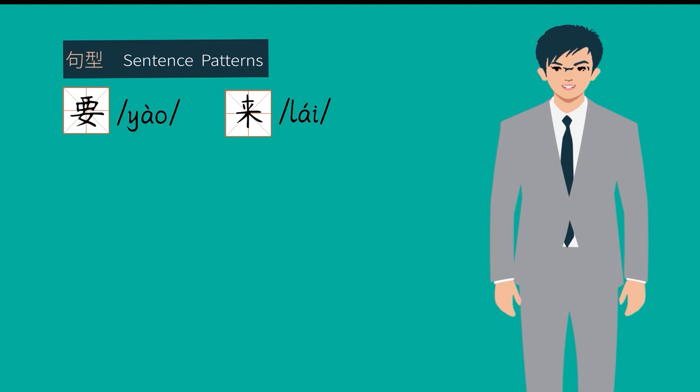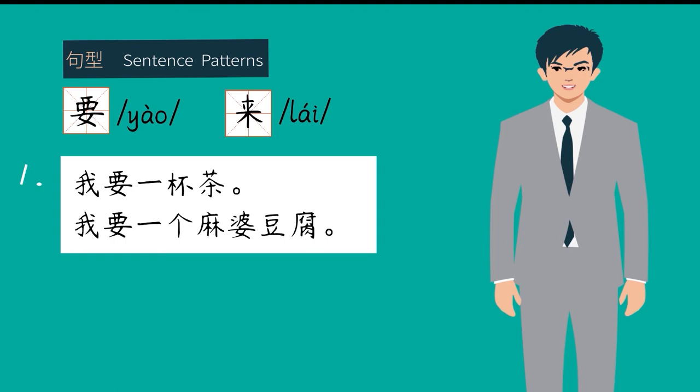For example, 我要一杯茶, I want one cup of tea. 我要一个麻婆豆腐。要 is a verb used to express your needs.